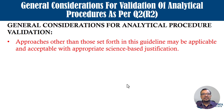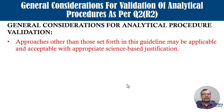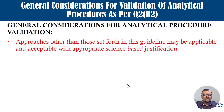Approaches other than those set forth in this guideline may be applicable and acceptable with appropriate science-based justification. There are a number of performance characteristics — specificity, linearity, precision, etc. — and this guideline describes how to conduct them. However, it is not always mandatory to follow the same recommended procedures; you can switch to alternative procedures by providing appropriate science-based justification, for example regarding how precision is conducted for content uniformity of the dosage.